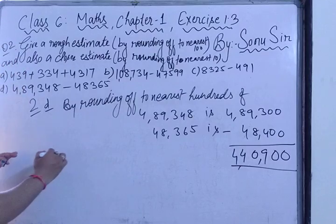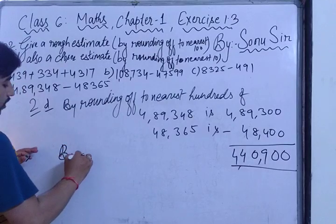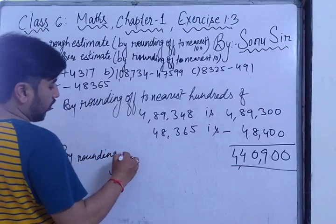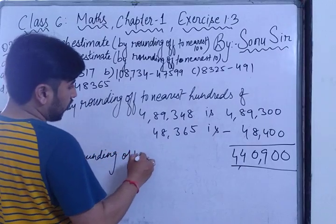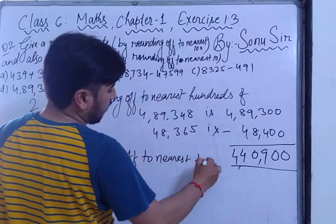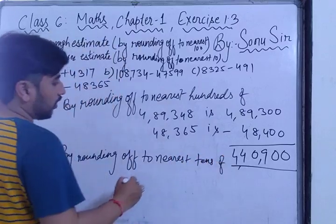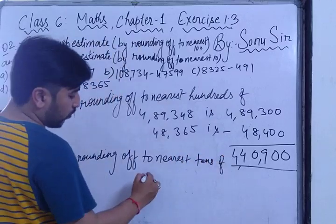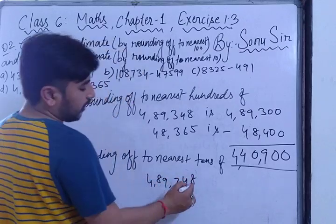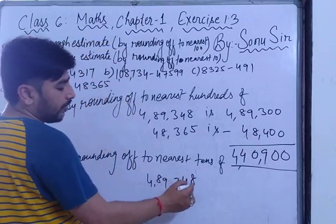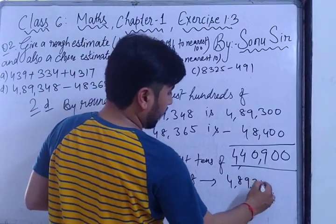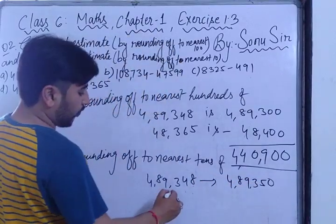Rounding 489348 to nearest tens — the unit digit is 8, greater than 5, so it becomes 489350. The second number 483659 — the unit digit is 9, greater than 5, so it becomes 483660.